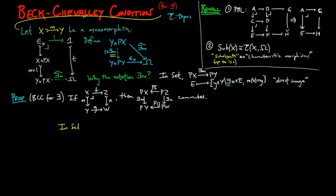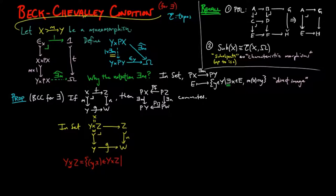Before proving this, let's see what this looks like in the category of sets. Recall that a pullback of set maps n and g is isomorphic to the subset of the Cartesian product Y cross Z consisting of elements (little y, little z) such that g(y) equals n(z), with f and m being the obvious projections.